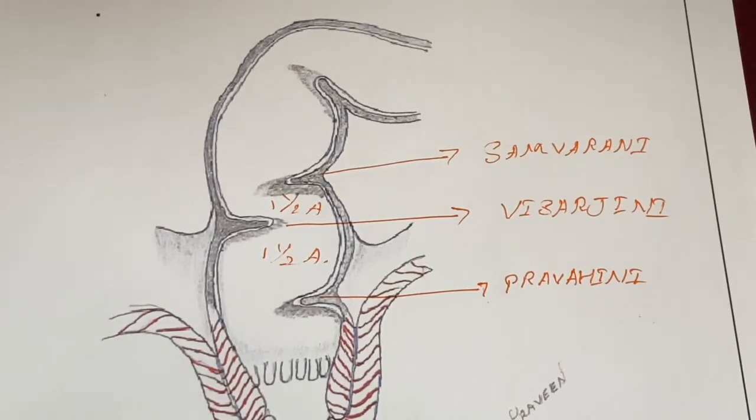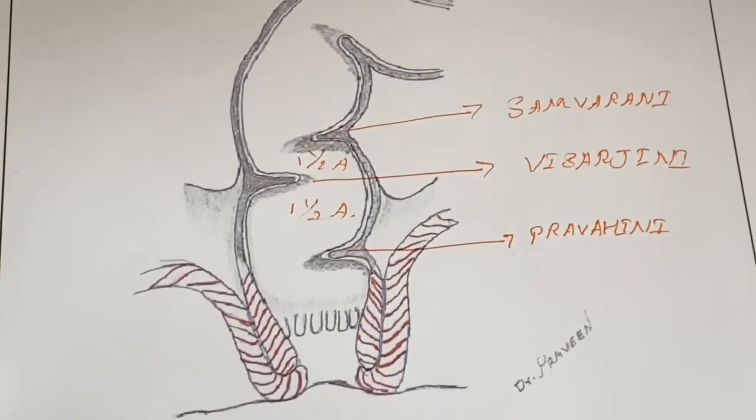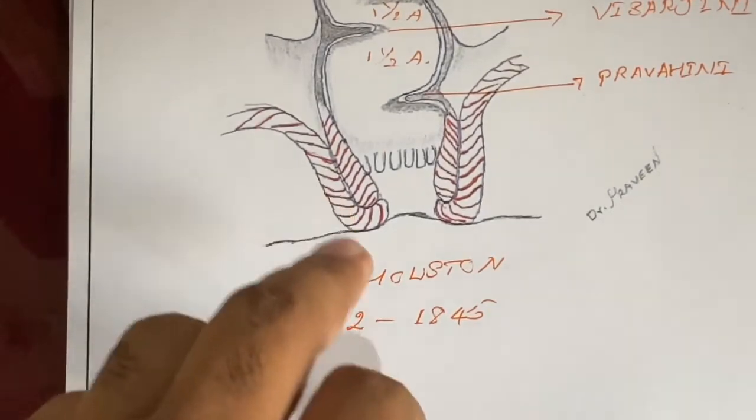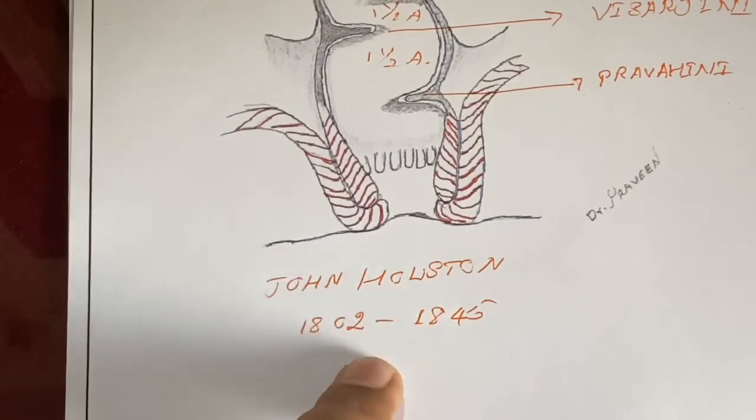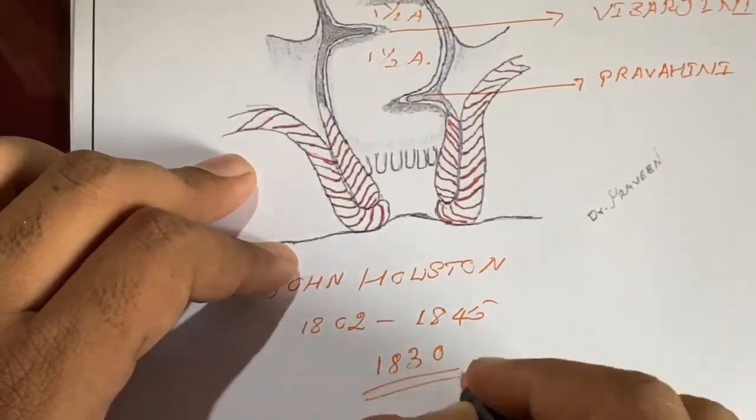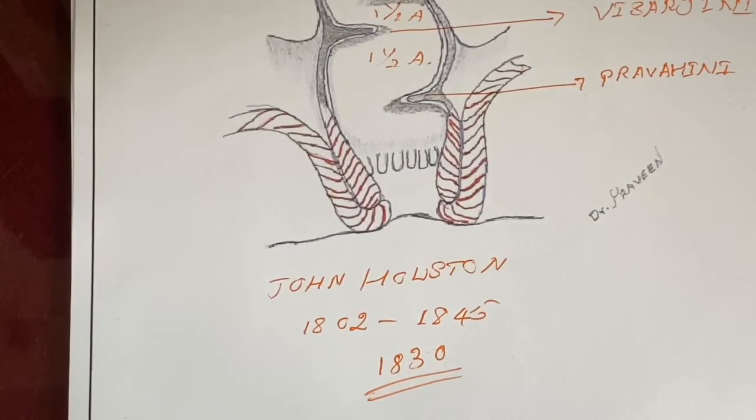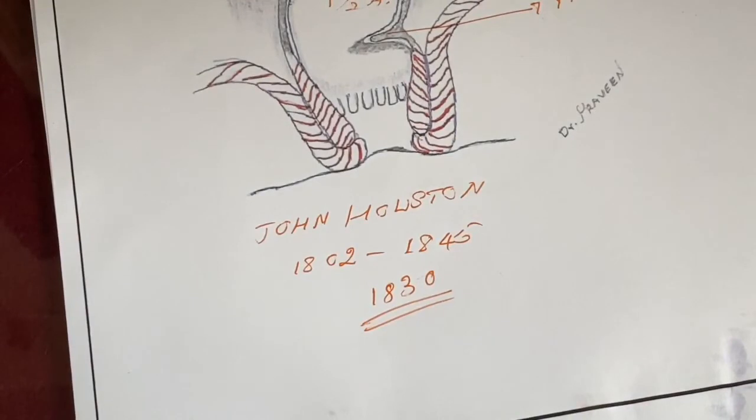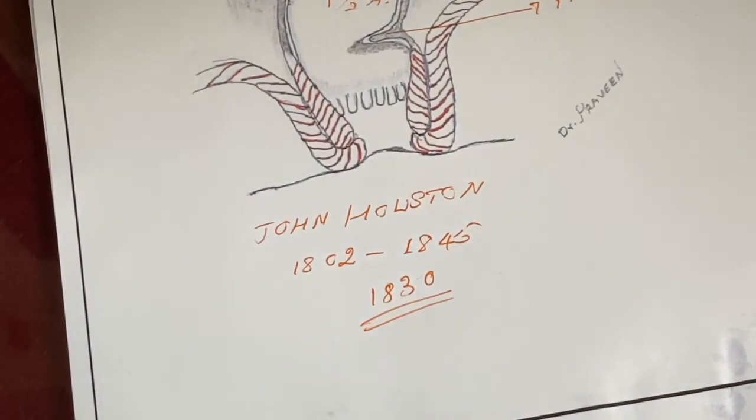These words are in Sanskrit. Sanskrit is one of the oldest languages in the universe. So when we call these walls as John Houston's valves because he published a paper in the year of 1830, if it is so, just because of that reason we are addressing these walls as Houston's valves, then Sushruta is the person who has mentioned in his classics about 5000 years back.